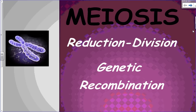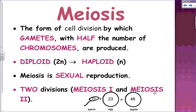Welcome to the second set of notes on meiosis, reduction division, and genetic recombination. Meiosis is a form of cell division by which gametes with half the number of chromosomes are produced. A normal body cell is 2n — a diploid structure — and meiosis turns that into a haploid, or N, cell. That haploid cell is what a gamete is. Meiosis is part of sexual reproduction.